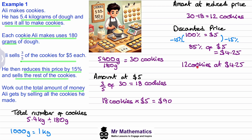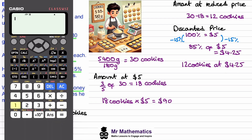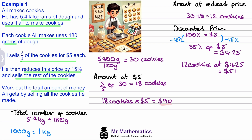So 0.85 multiplied by 5 gives us 4.25 dollars. When we sell 12 cookies at 4.25 each, we calculate 12 multiplied by 4.25 and get 51 dollars. So the total amount of money is 90 plus 51, which gives us 141 dollars.